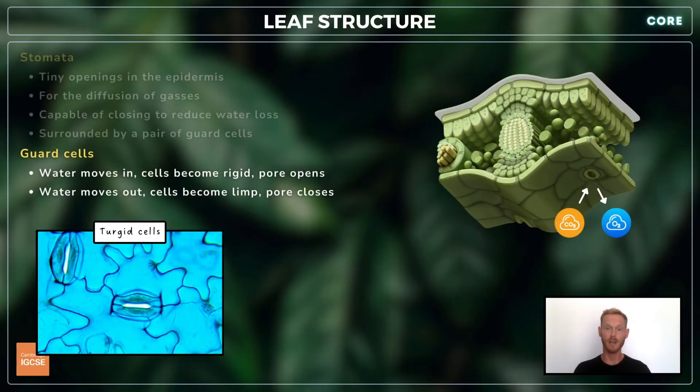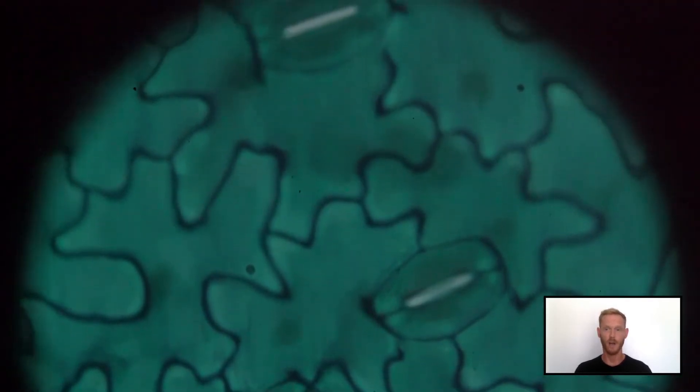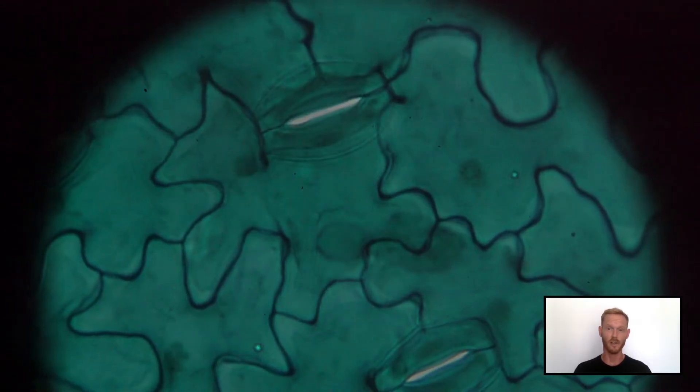In daylight, the leaf needs carbon dioxide for photosynthesis, so water moves into the guard cells by osmosis, causing them to change shape and the pore to open. At night time, water moves out of the guard cells, and the pore closes to reduce water loss. This of course cuts off the supply of carbon dioxide, but this isn't a problem as photosynthesis doesn't occur in the dark.